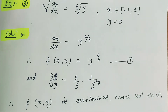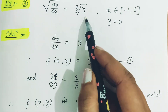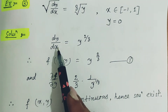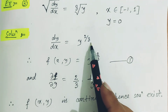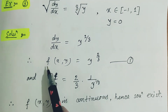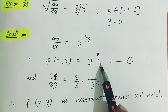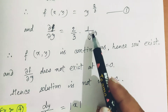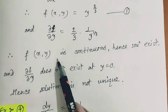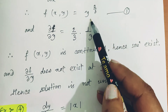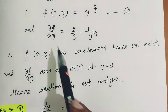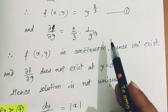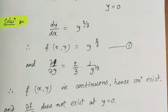Third example: dy/dx = y^(2/3) (simplified from √(dy/dx) = ∛y), with x ∈ [−1, 1] and y(0) = 0. Here f(x,y) = y^(2/3), and taking the partial derivative with respect to y gives ∂f/∂y = (2/3) · y^(−1/3). Since f(x,y) is continuous for all y values, the solution exists. However, ∂f/∂y does not exist at y = 0 (it is undefined there), hence the solution is not unique.